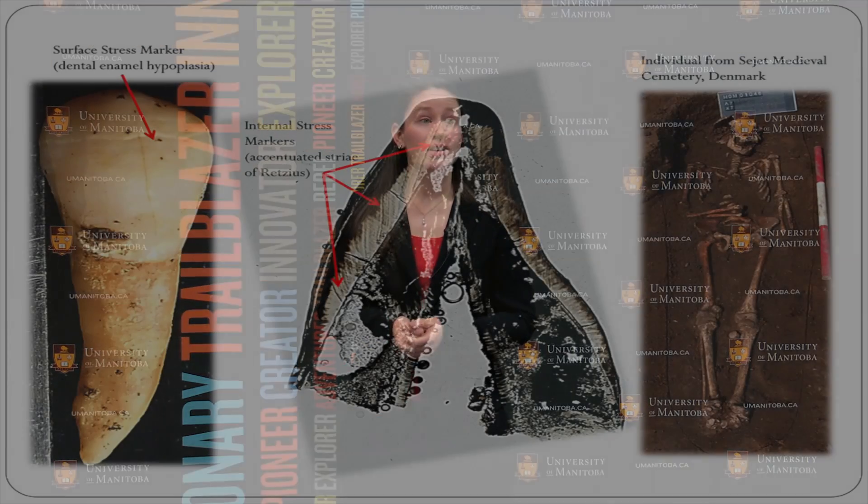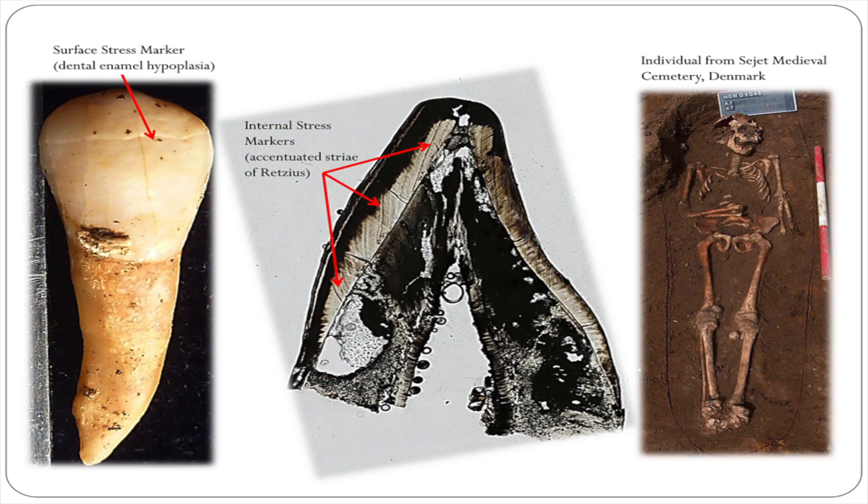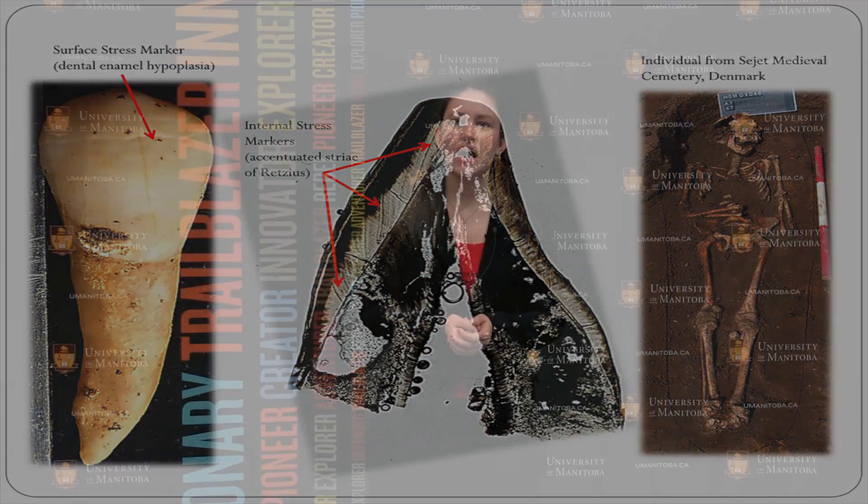These are examples of stress events, and if a stress event is severe enough and occurs when our teeth are developing, it can result in a permanent change to the part of the tooth that's growing at that point in time. So our friend up here was stressed when he was around two and a half years old.